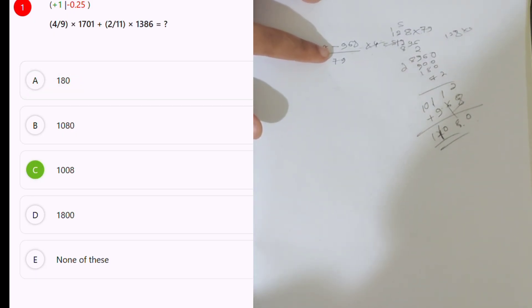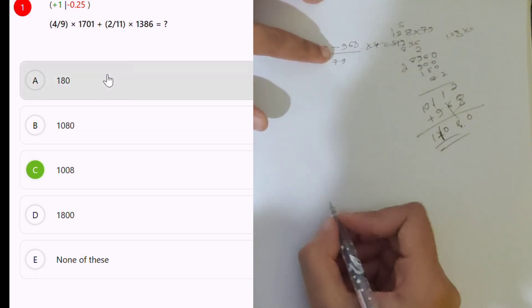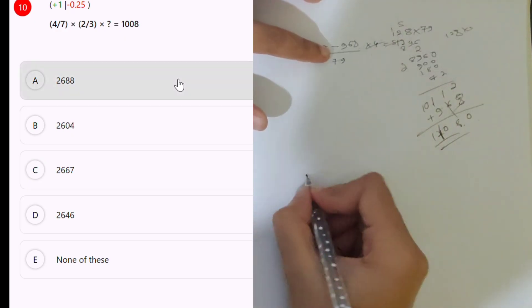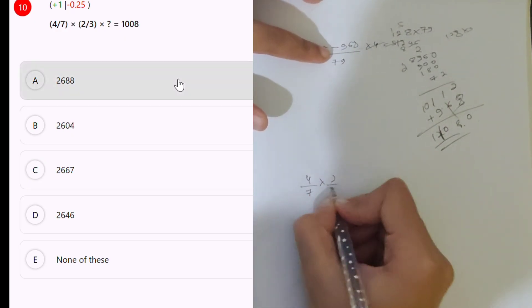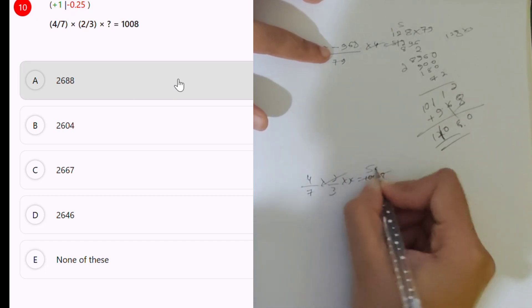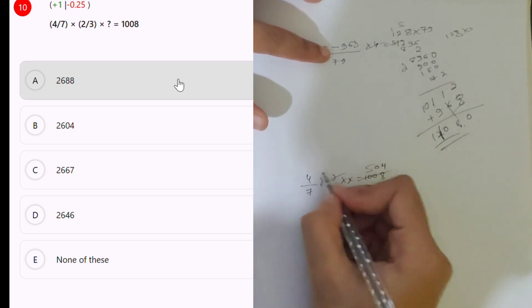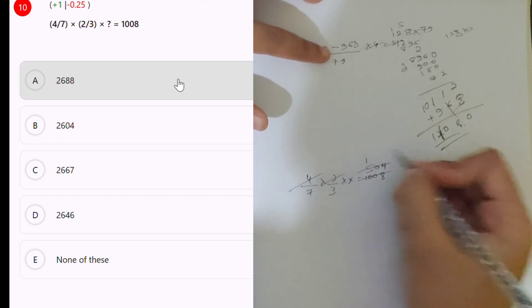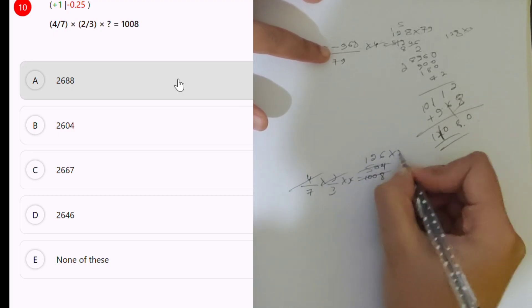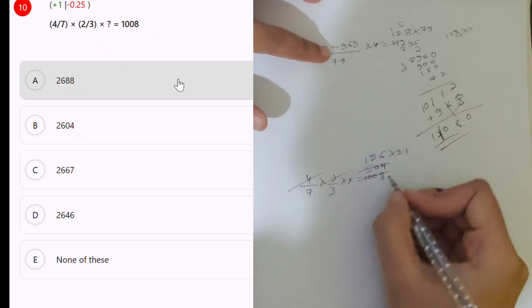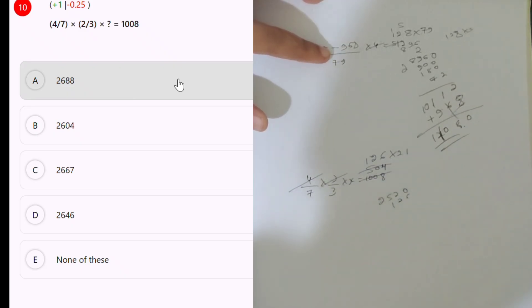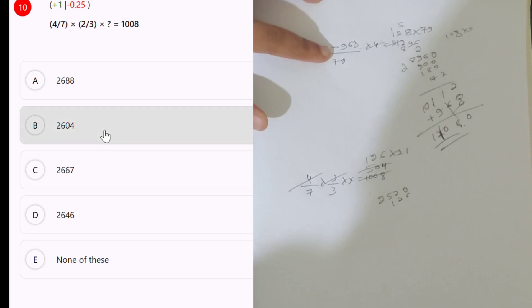Next: 4 by 9. Next question: 4 by 7 into 2 by 3 into x, which is equal to 1008. 2 5s are, and 2, 2, 4s are, and 4 1s are 4, 2s are 8 and 6, into 21. Into 2: 252 into 1 is 126. So 2646 is the answer.